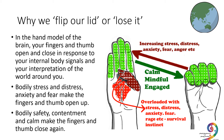In the hand model of the brain, your fingers and thumb open and close in response to both your internal body signals and your interpretation of the world around you. Bodily stress and distress, anxiety and fear make the fingers and the thumb open up. But bodily safety, contentment and calm make the fingers and the thumb close again. The thumb will flick open when you become completely overloaded with stress, distress, anxiety, fear, rage, etc. — and that's when you go into your survival instinct.